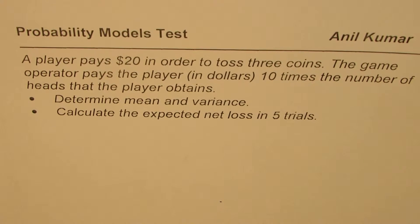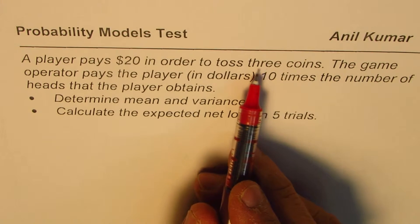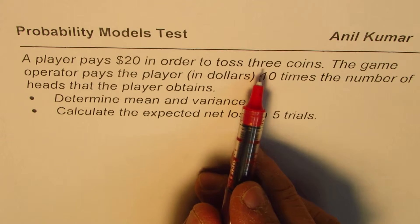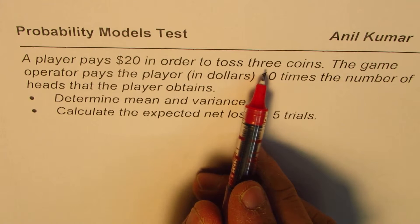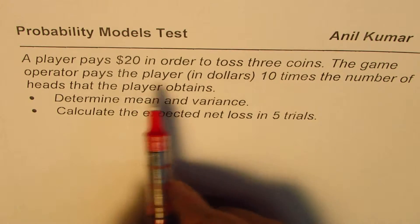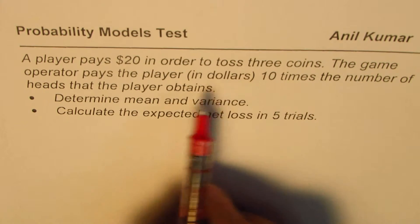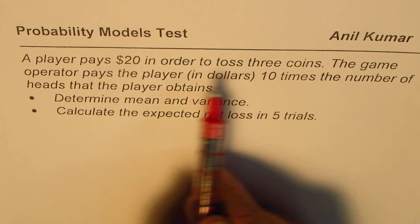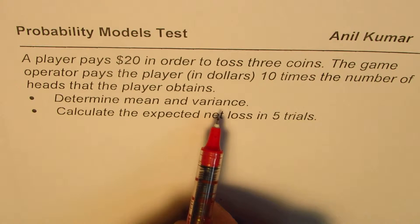Now in this particular question, what we see is that 3 coins are tossed. So the possibility of getting heads is no heads at all, 1 head, 2 heads or 3 heads. So there are 4 possible values. Based on how many number of heads one gets, the operator pays 10 times those number of heads as the winning. That's how the game is played. We need to find the mean and the variance for this particular game.